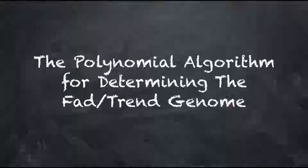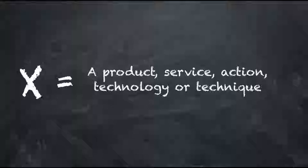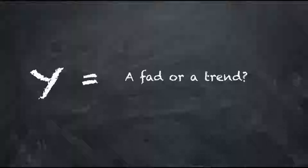Now with any equation, you have to start with a known parameter. In this case, let's call X a potential trend, which we'll define as a product, service, action, technology, or technique. We're trying to solve for Y, which is: is this a FAD or a trend?